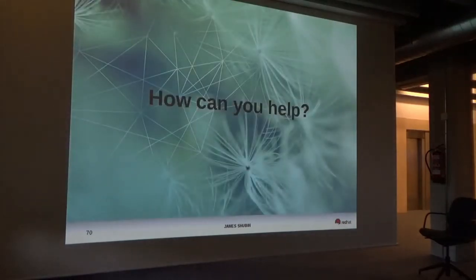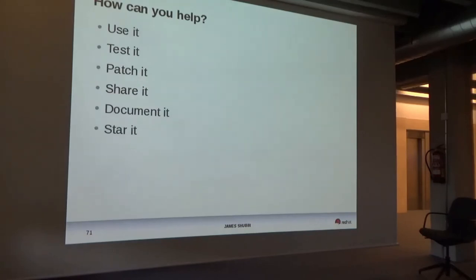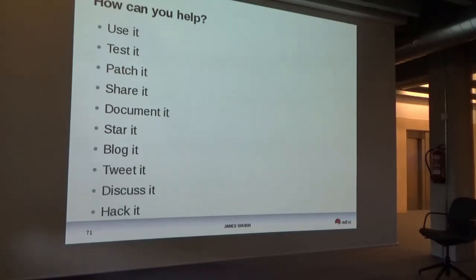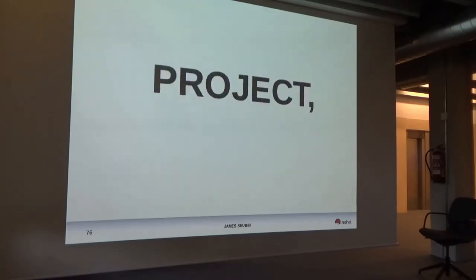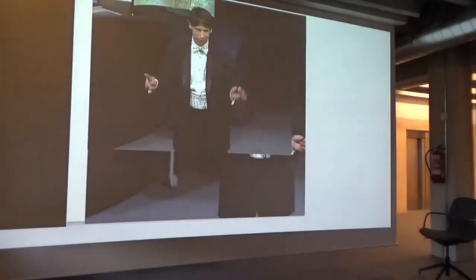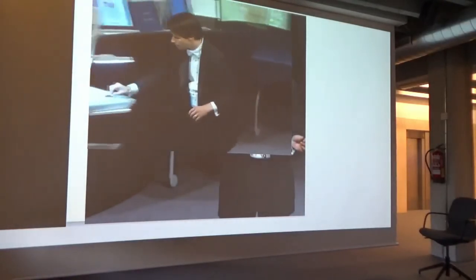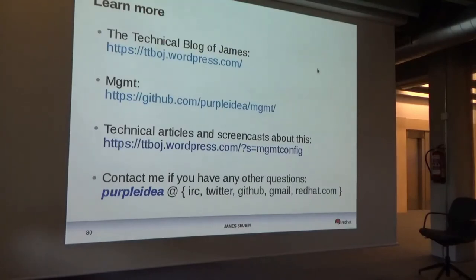Future work: the tool is getting closer to production ready but not there yet. We're building the language — I hope to have a public download available in the next few months. New resources needed include an HTTP resource, a mount resource, a net resource for network cards, and an MKFS resource to declare the state of file systems. How can you help? Use this, test it, patch it, share it with your friends, document it, star it on GitHub, blog it, tweet it, and hack on it. This is a community project — not a big corporate thing. Red Hat has been good and leaving me alone to build what I want. Hopefully MGMT will make your life easier.